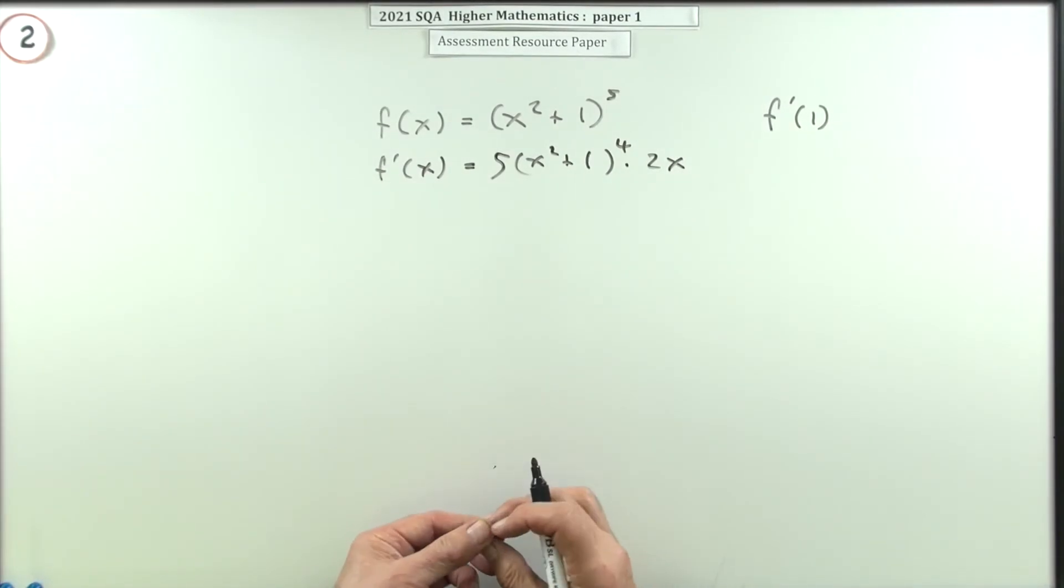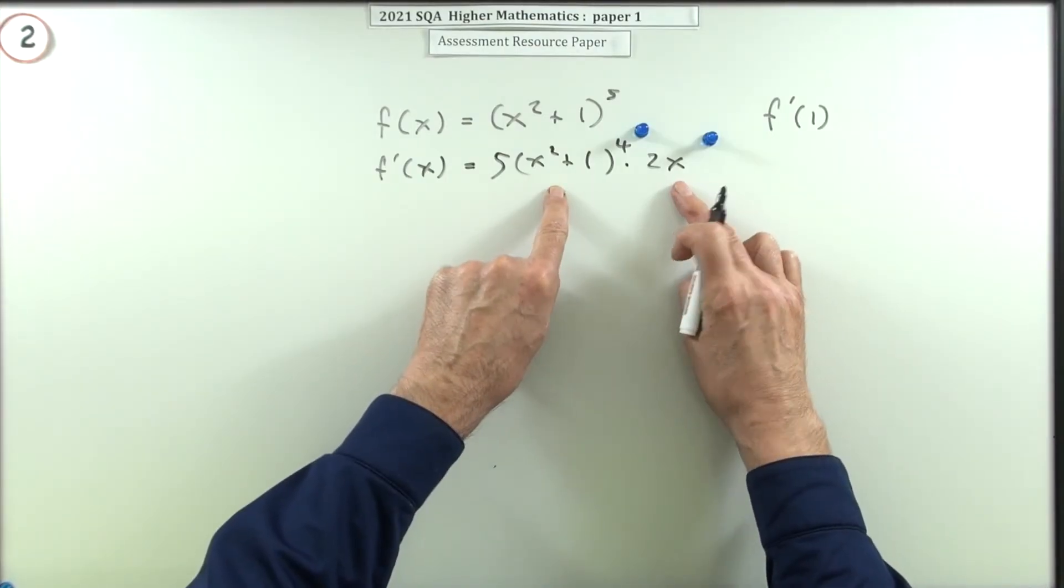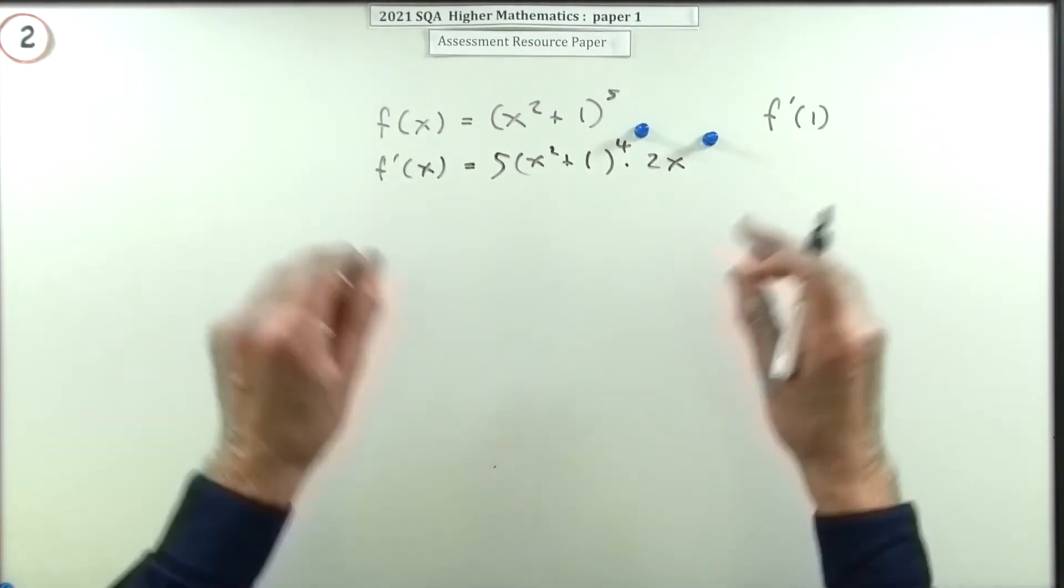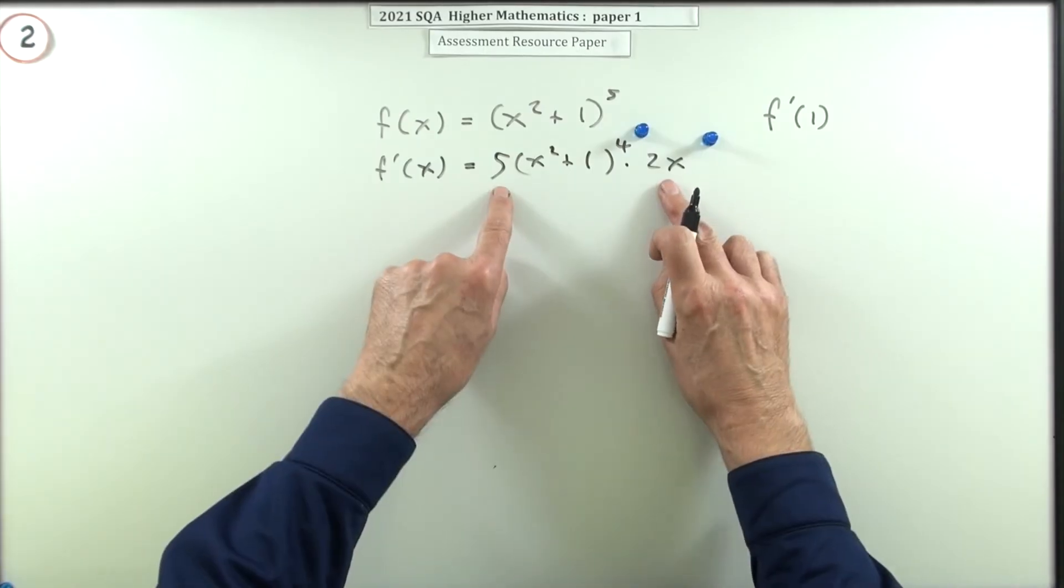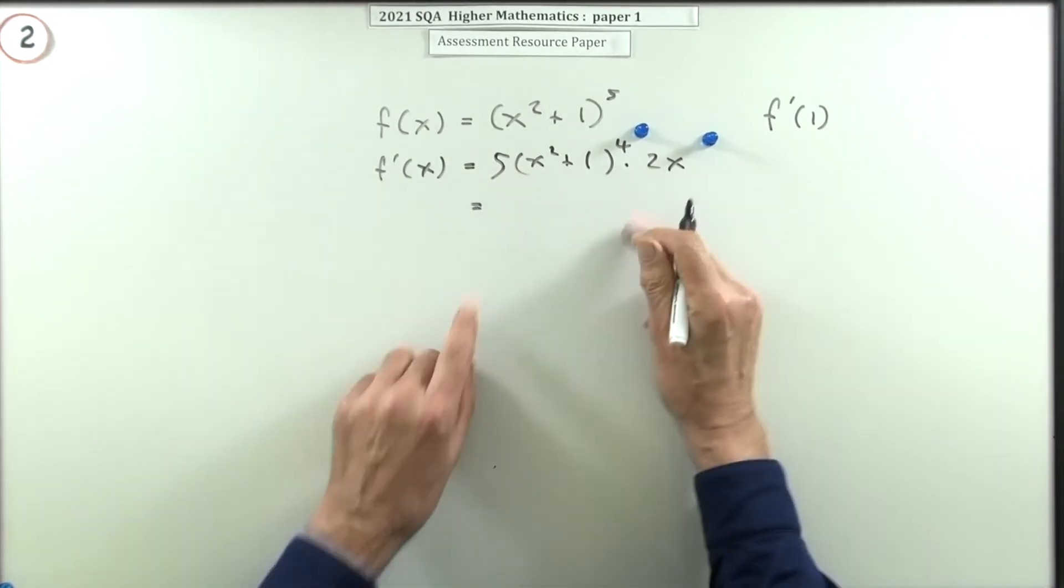Just doing it in the two stages. So doing the outer function first of all, and then doing the inner function, multiplying the two of them using that chain rule as it's called. Now you don't need to tidy that up if you're going to evaluate it. You could just put them in. I'm going to tidy up anyway.